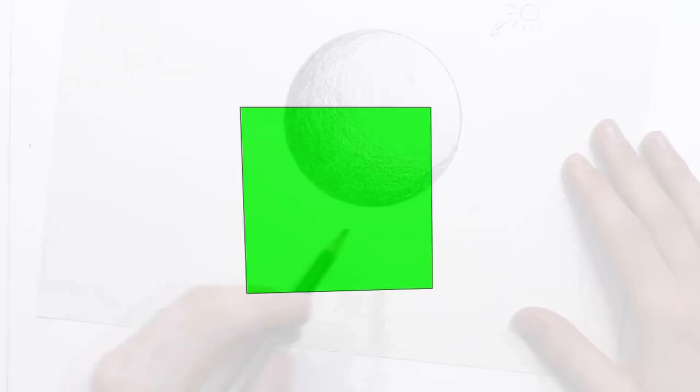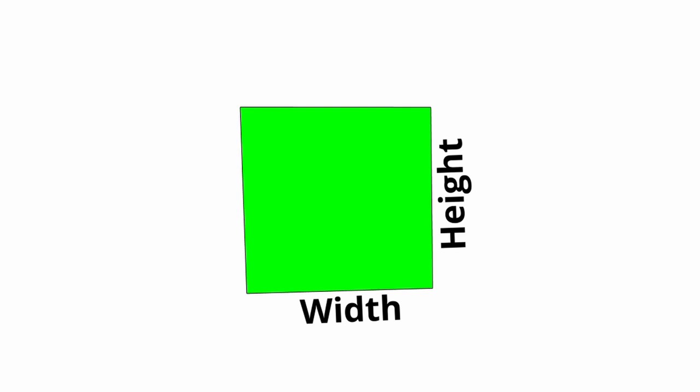So whilst shapes have two dimensions, height and width, forms have three dimensions, height, width and depth.